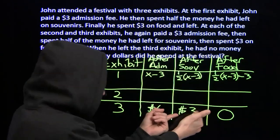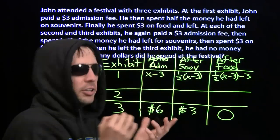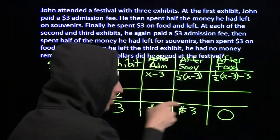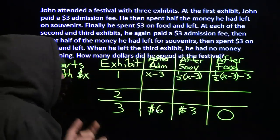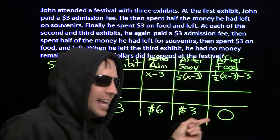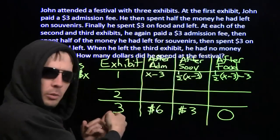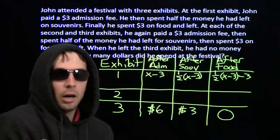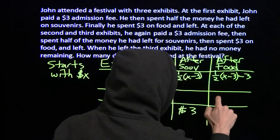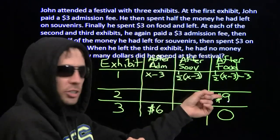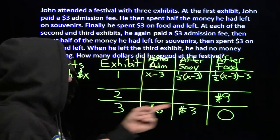He must have had six bucks: spent half on souvenirs, and had three left. We can keep working backwards. We could have thought of this right from the beginning — we know what happens at the end, we know where it ends, so we start from where we end and work backwards. If he had six dollars after admissions to the third exhibit, he must have had nine dollars before that admissions, because he spent three dollars on admissions. So he must have had nine dollars after the food in the second exhibit.